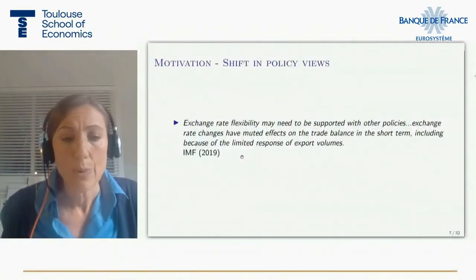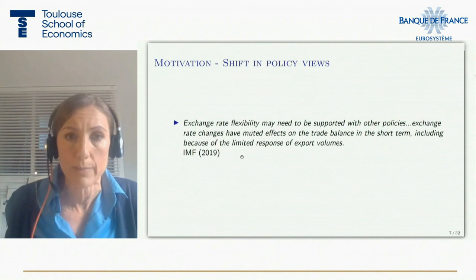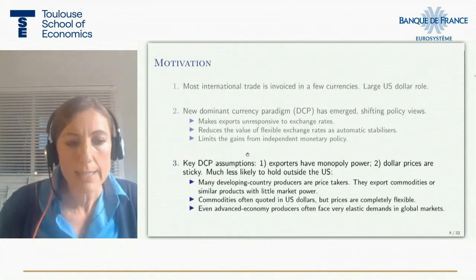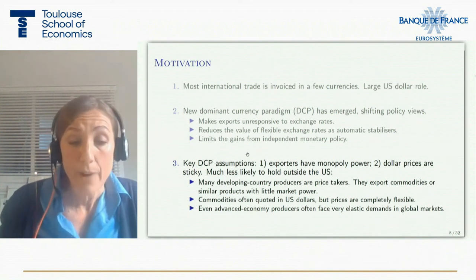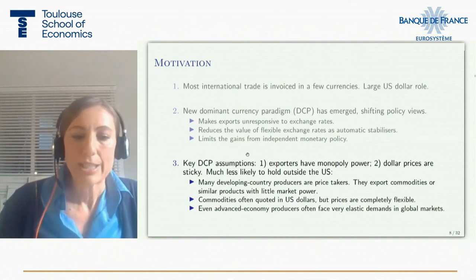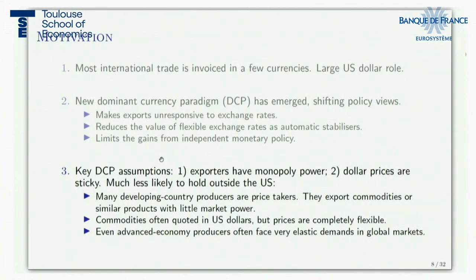An implication for policy, as seen in this quote from the IMF, is that other stabilization tools should be deployed because exchange rate changes have muted effects on the trade balance given the limited response of export volumes. There are two key assumptions underlying this thinking. The first is that exporters have monopoly power, and the second is that prices are sticky — in the dominant currency framework, sticky in dollars. If prices are sticky in dollars, an exchange rate depreciation by a non-US country does not change the export price in dollars, hence there is no expenditure switching and no increase in export quantities.